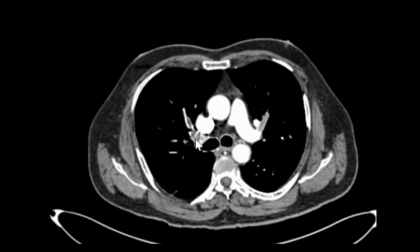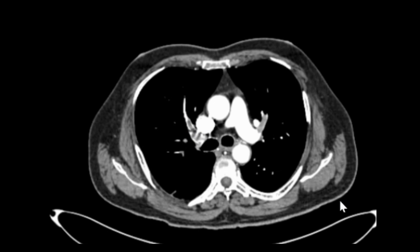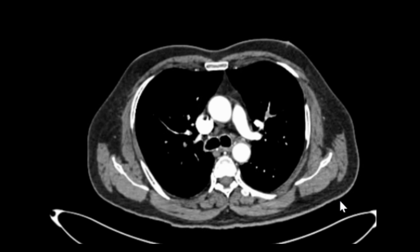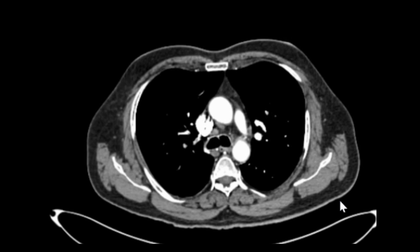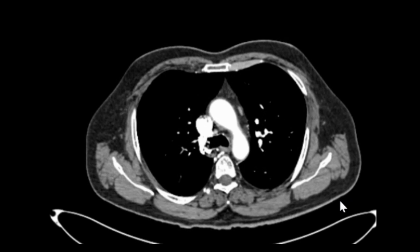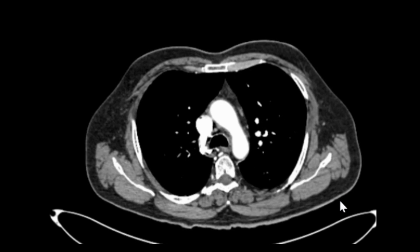This filling defect is nothing but thrombus. Here also we can see incomplete filling of the pulmonary artery branches with thrombi. Now we come up and see the upper lobe branches, above the level of the aortic arch.